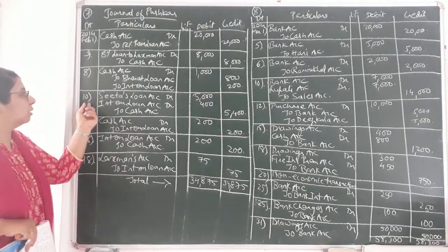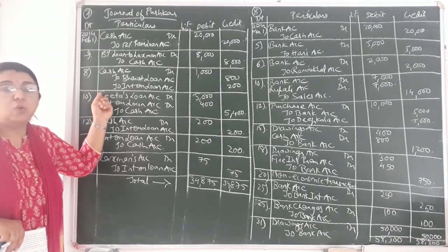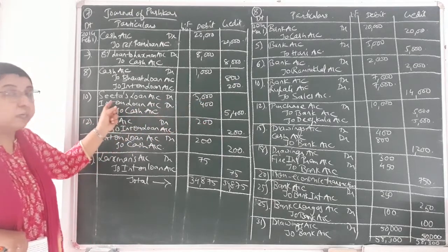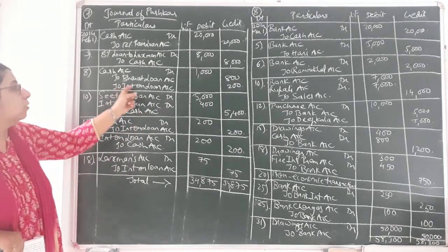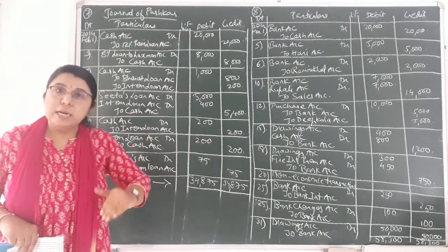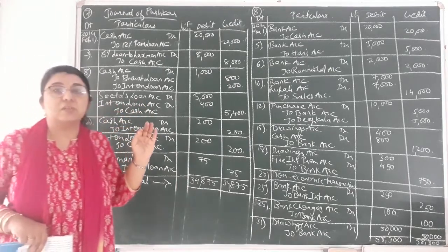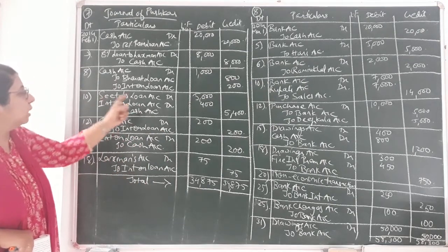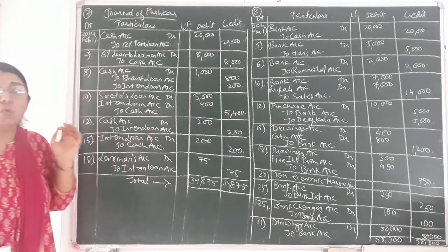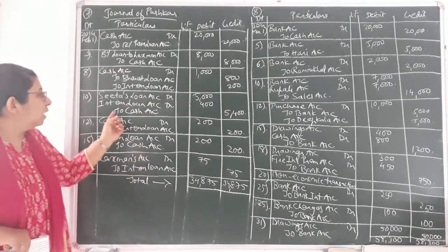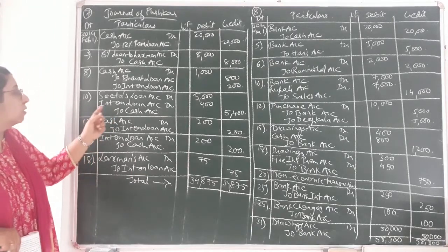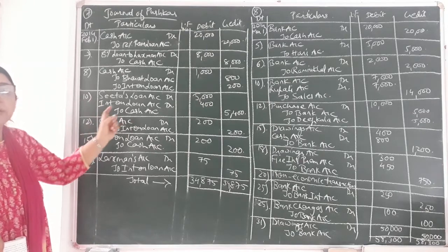The 10th date entry: SITA's loan account debit 5,000 — because SITA is the receiver, debit the receiver as per personal account rule — interest on loan account debit 400, because here interest on loan is an expense. As per the rule of nominal account, debit all expenses and losses. To cash account credit 5,400, because as per real account rule, credit what goes out. Narration: being the amount of loan including interest paid to SITA.